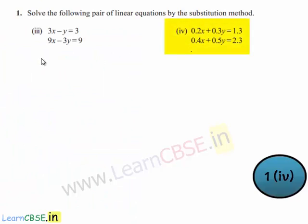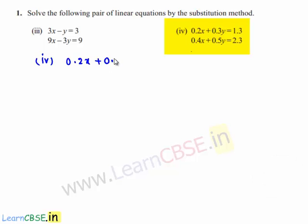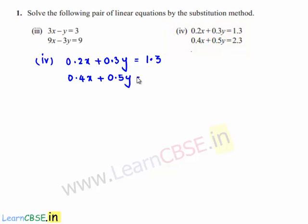Let us see the fourth problem now, which is 0.2x plus 0.3y is equal to 1.3, and 0.4x plus 0.5y is equal to 2.3. The given equations are in terms of decimals, so let us first convert them in terms of whole numbers.